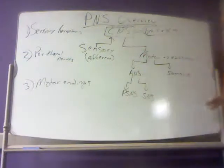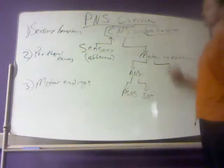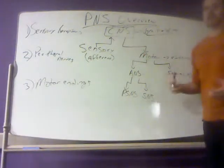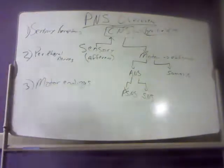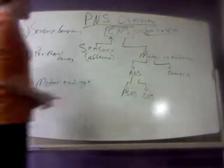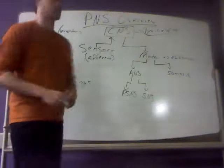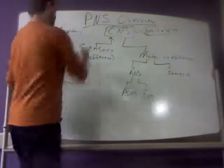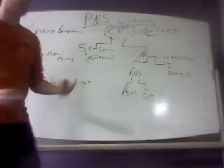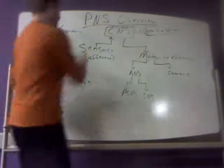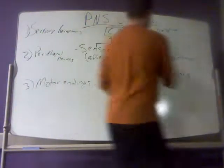The peripheral nervous system is about getting information into and out of the central nervous system. The PNS can be broken down into two major parts: a sensory part and a motor part.